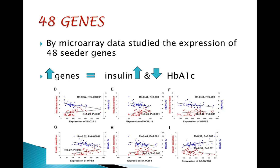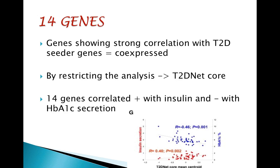Using microarray data from human islets, they studied the expression of 48 genes located in the vicinity of SNPs — single nucleotide polymorphisms — associated with type 2 diabetes or glycemic traits. Increased expression of these genes in islets was associated with higher insulin secretion and lower HbA1c, hereafter referred to as type 2 diabetes seeder genes, as shown in figures D to I.